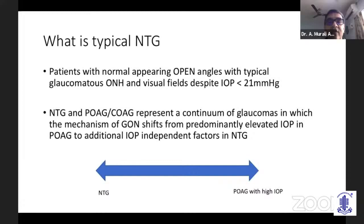We have to recognize there is a continuum or a spectrum, and you can have a mixed kind of glaucoma in which there is variation in variables — factors other than intraocular pressure — which can cause the glaucoma.